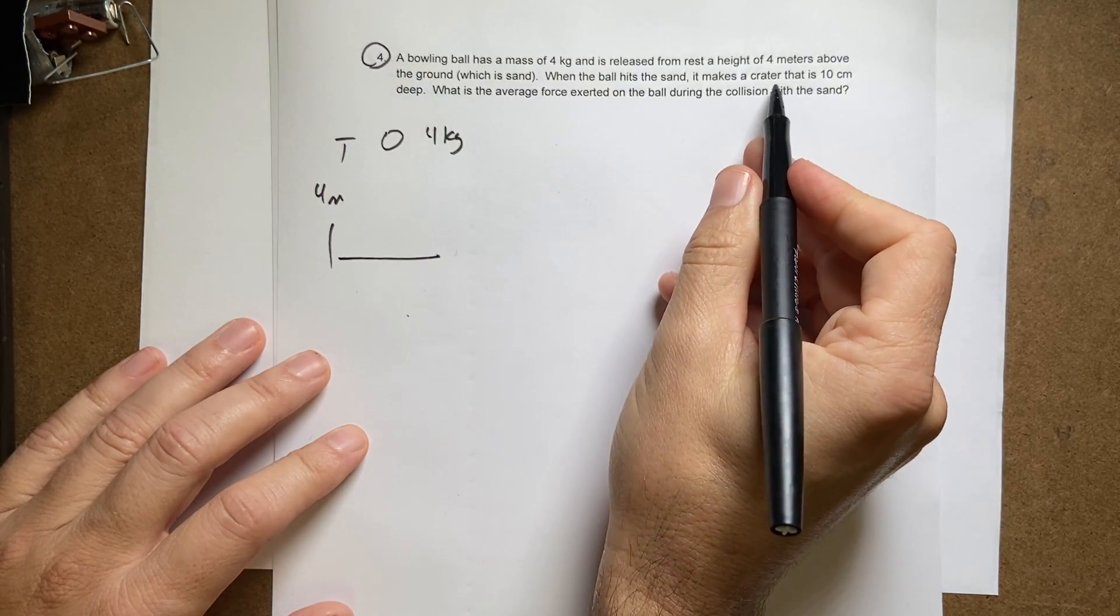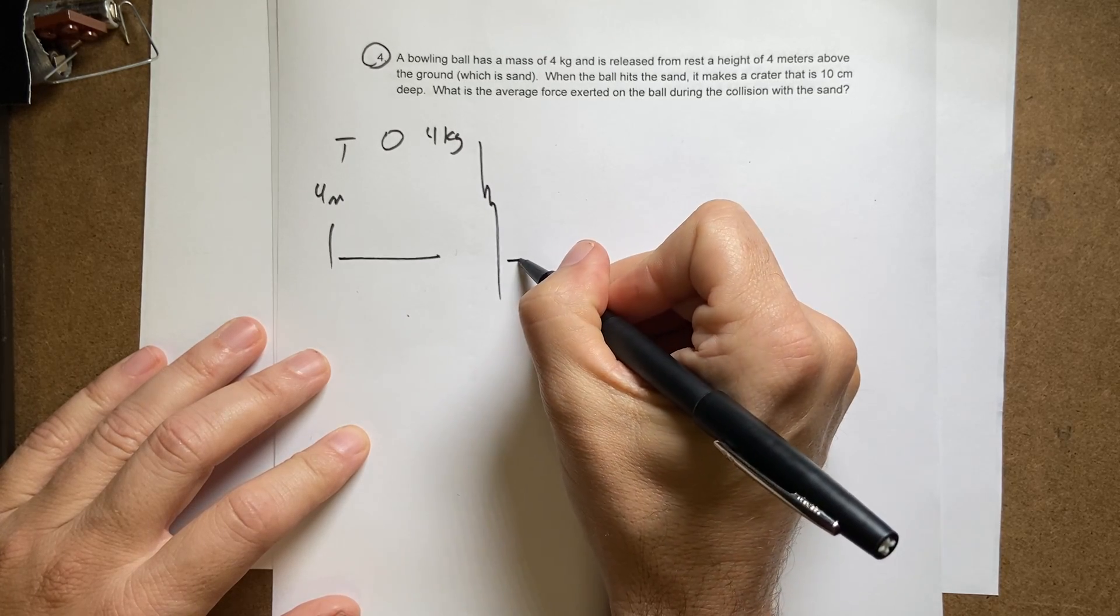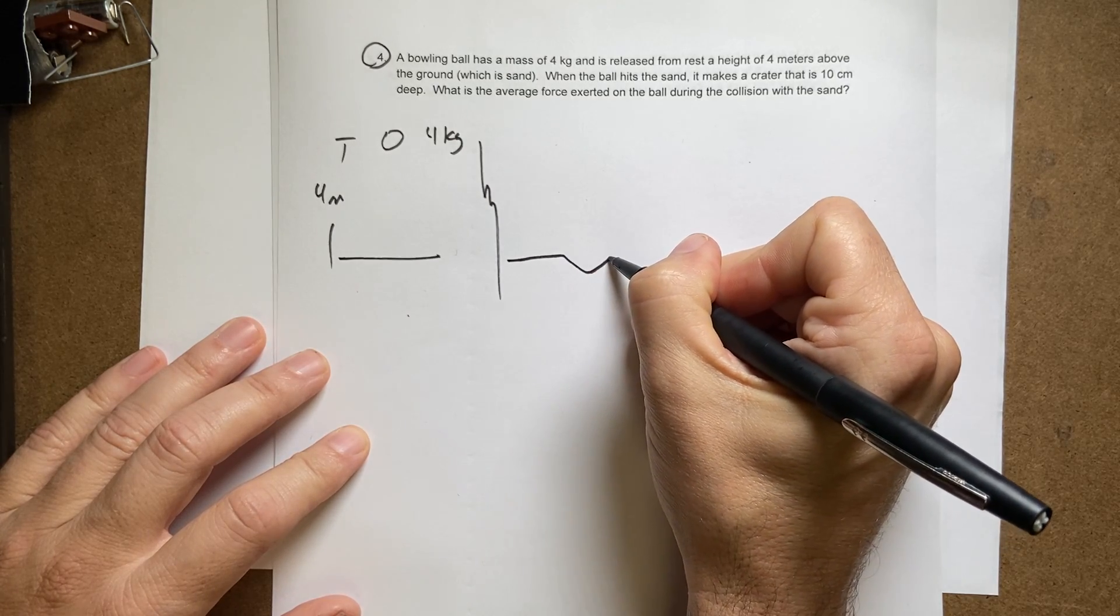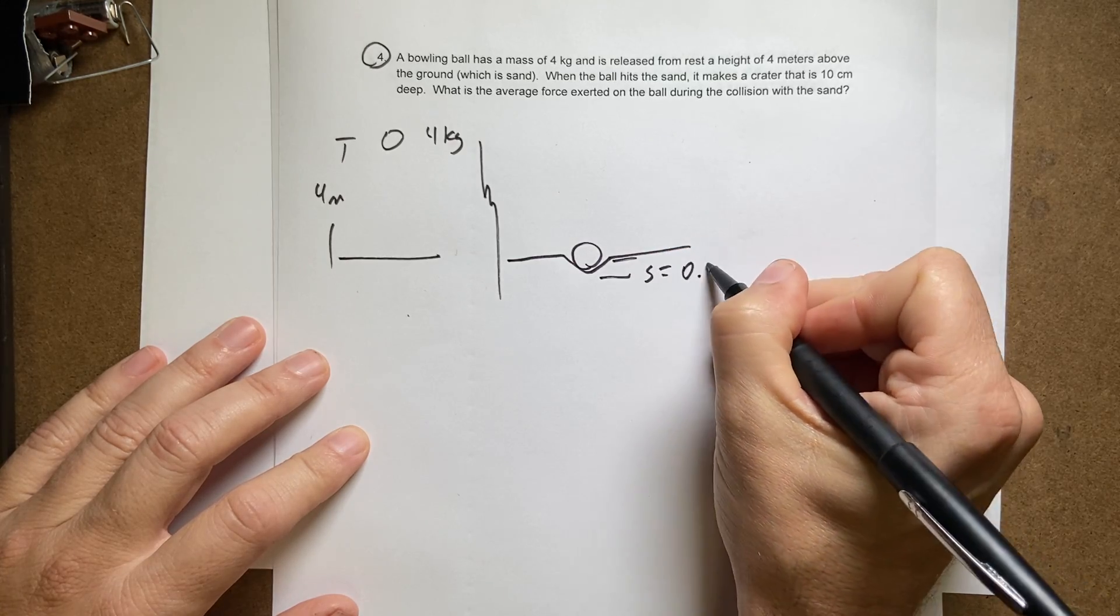When the ball hits the sand, it makes a crater that's 10 centimeters deep. So this is going to be afterwards. It's like this. And that is S equals 0.1 meters.